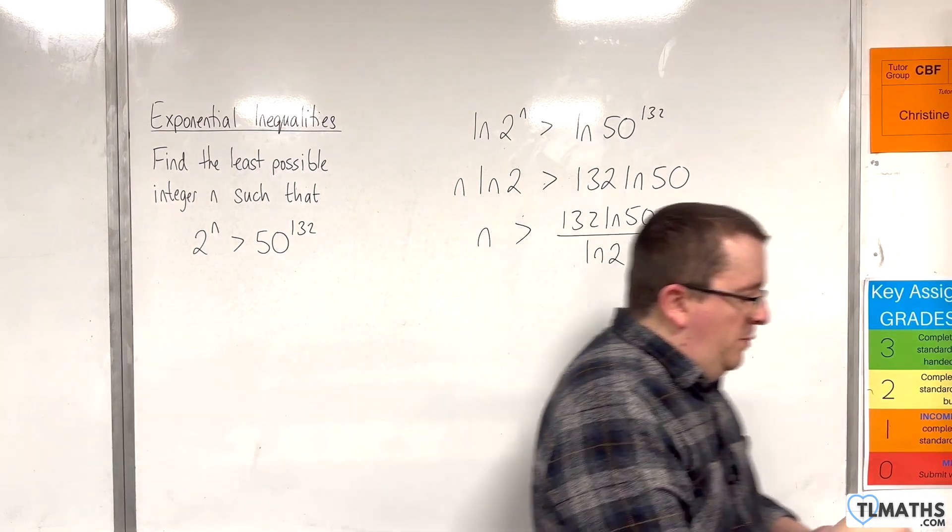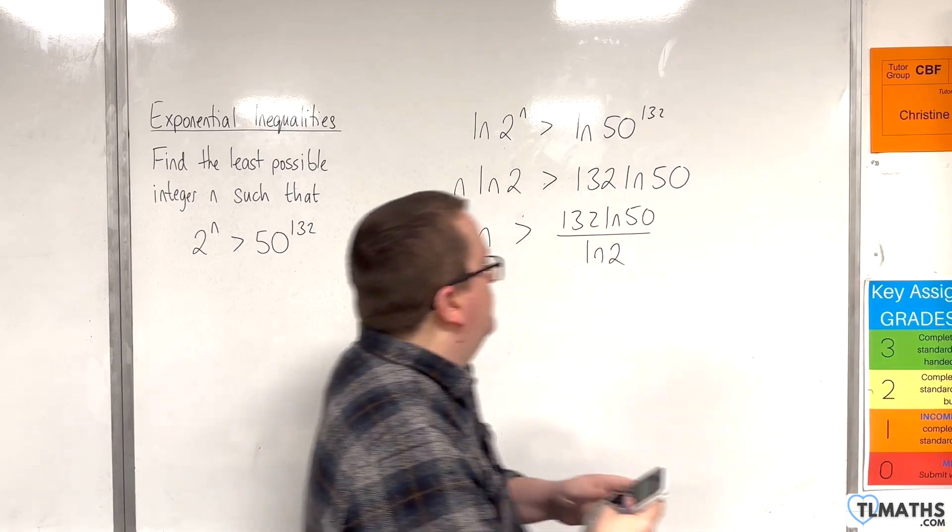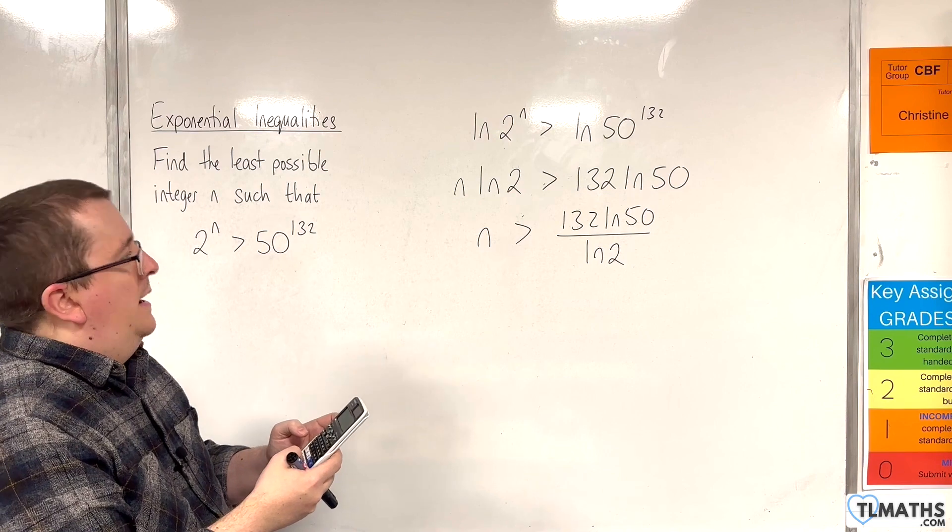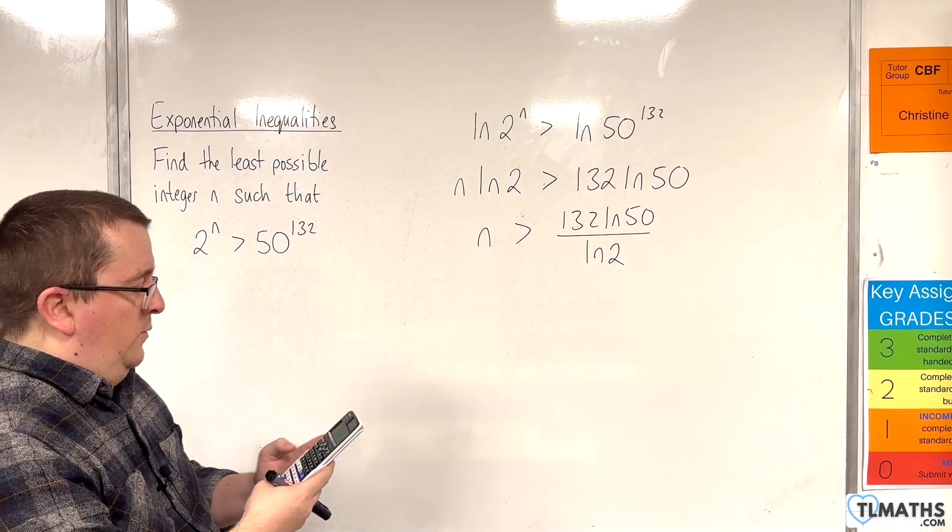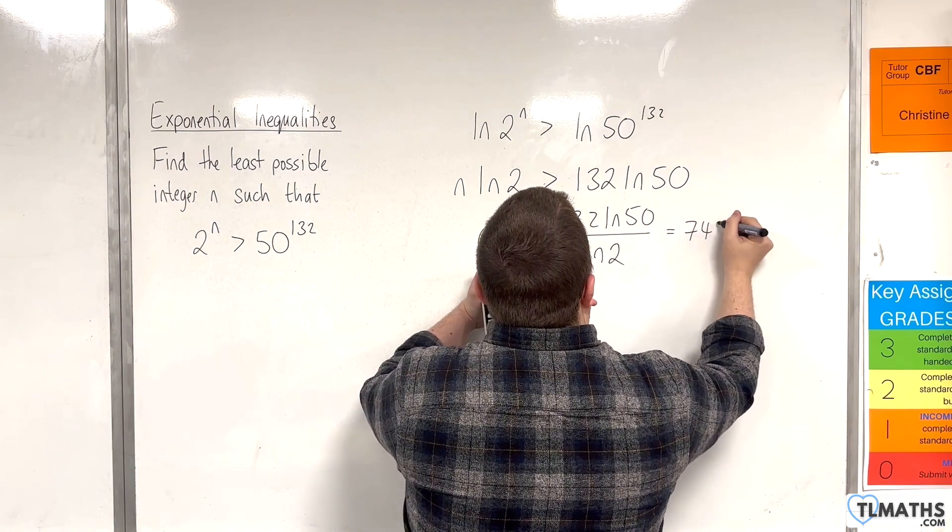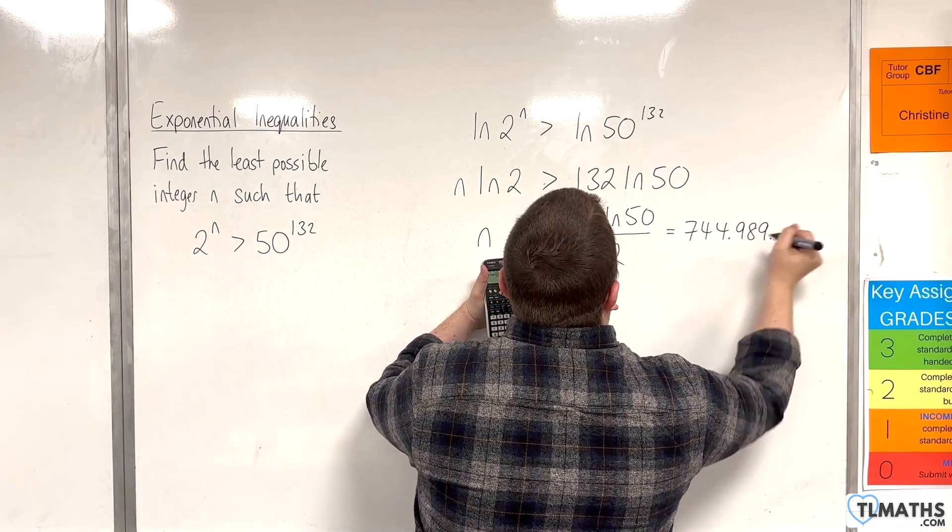Okay, so I'm going to put that into my calculator. So, 132 times the natural log of 50 divided by the natural log of 2. And this is 744.989, etc.